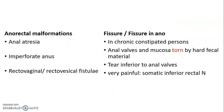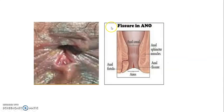Anorectal malformations due to embryonic anomalies can include anorectal atresia — failure to canalize — imperforate anus, and rectovaginal or rectovesical fistula. A fistula is a communication channel between two epithelial-lined surfaces. Fissure in ano occurs in chronically constipated individuals where the anal valves and mucosa are torn by hard fecal matter. This tear occurs inferior to the anal valves and is very painful due to somatic innervation. The embryonic origin is from the proctodeum, so innervation is somatic via the inferior rectal nerve. It is a very painful tear on the anal canal due to chronic constipation.